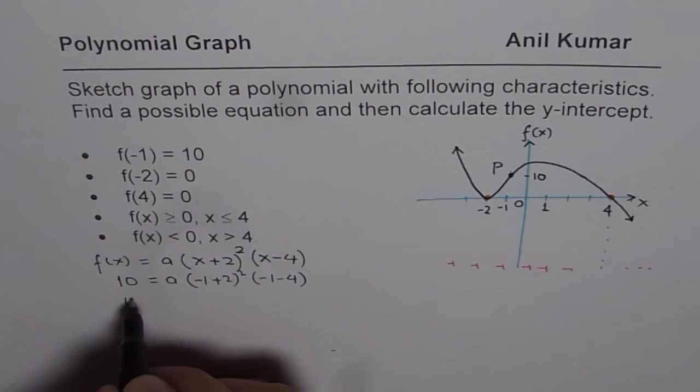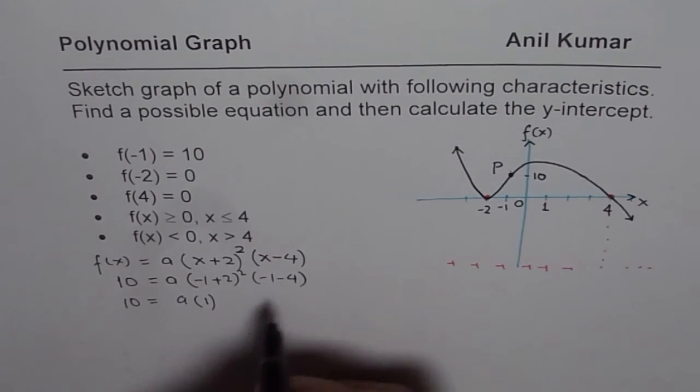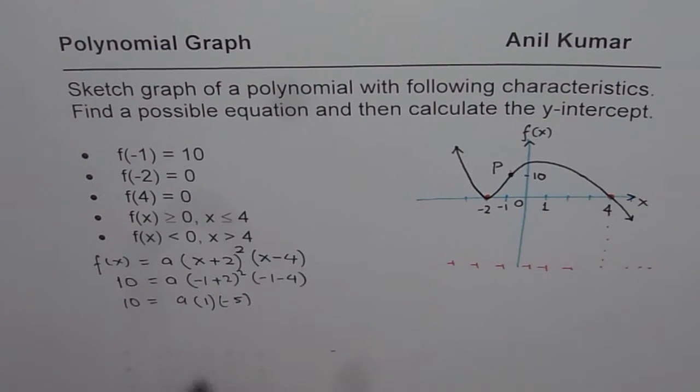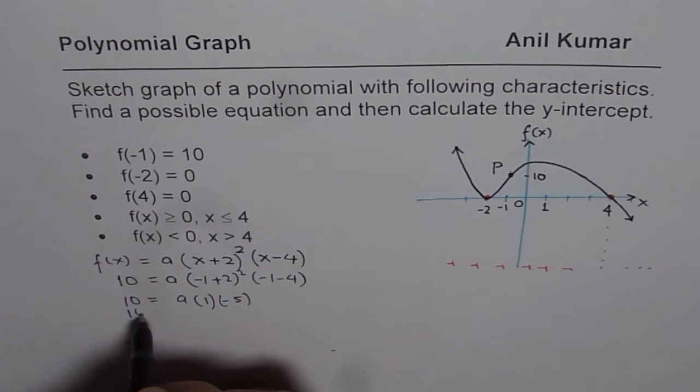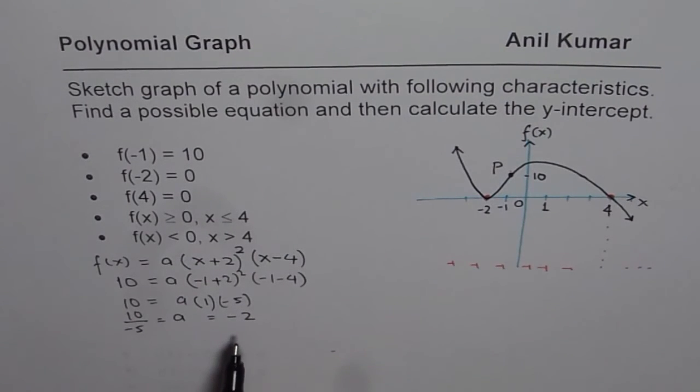So what we get here is 10 equals to a times minus 1 plus 2 is 1, 1 squared is 1, and this is minus 5. Now since this is minus 5, a could be written as 10 divided by minus 5 is a, which is minus 2. So we get a as minus 2.